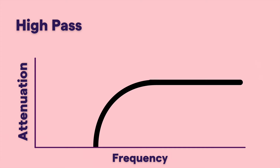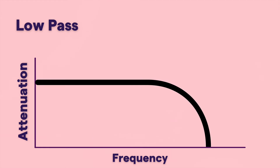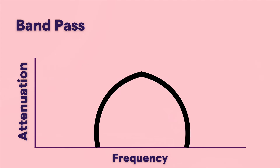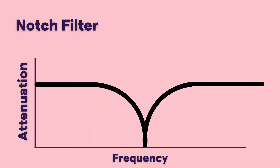Anything to the right of the cutoff line will pass through; anything to the left will not. A low-pass filter is just the opposite — it allows low frequencies to pass through, and anything to the right of that line would not pass through. A band-pass is essentially a combination of the two, cutting both low and high frequencies so you hear what's left in the middle. The notch filter is basically the opposite of that — all the lowest and highest frequencies remain, but a specific set of middle frequencies are cut.